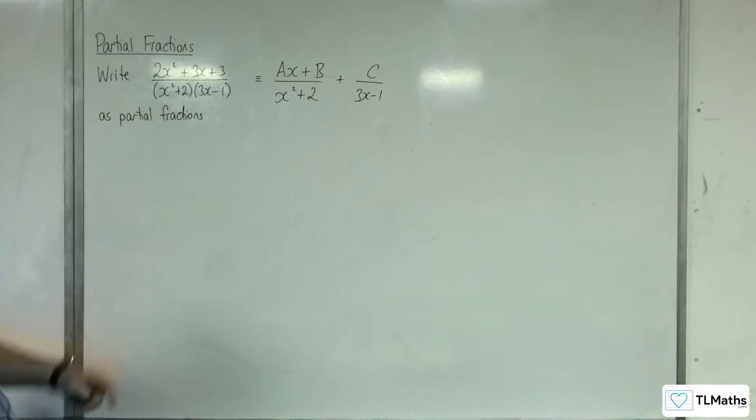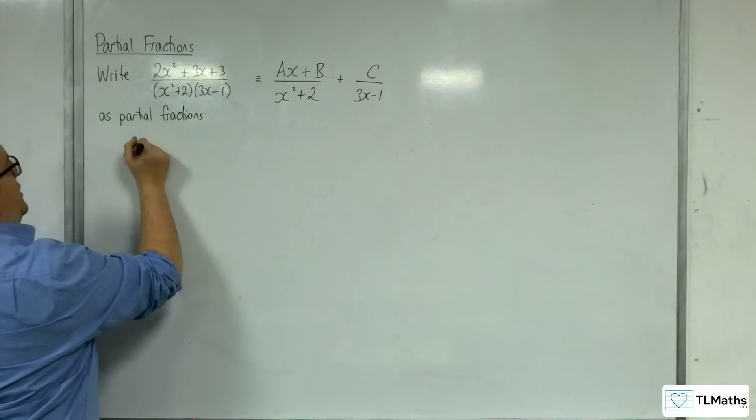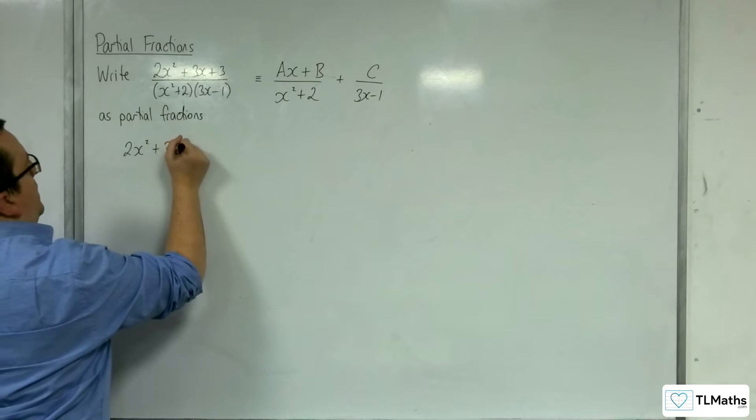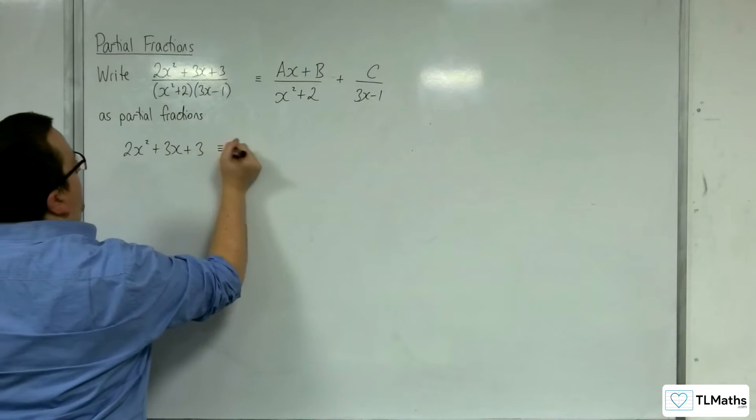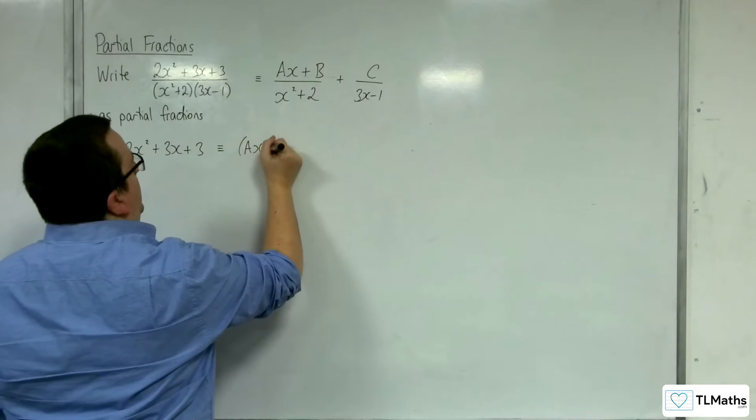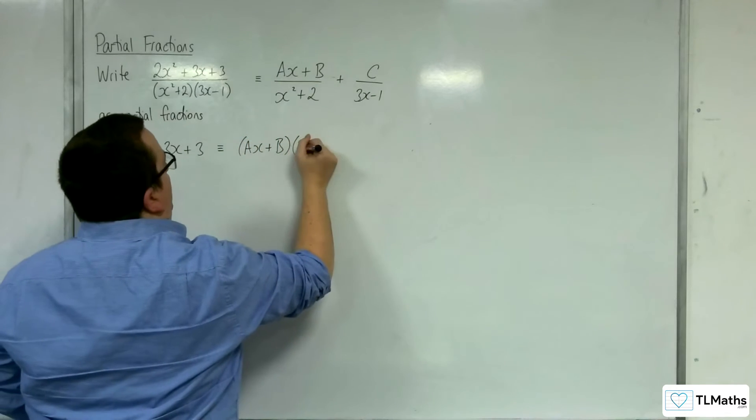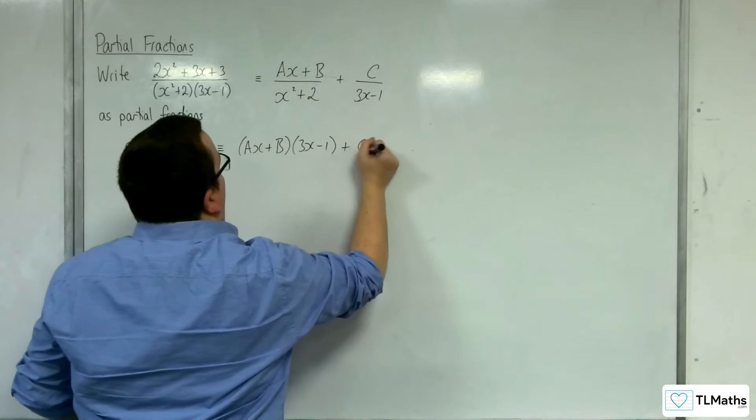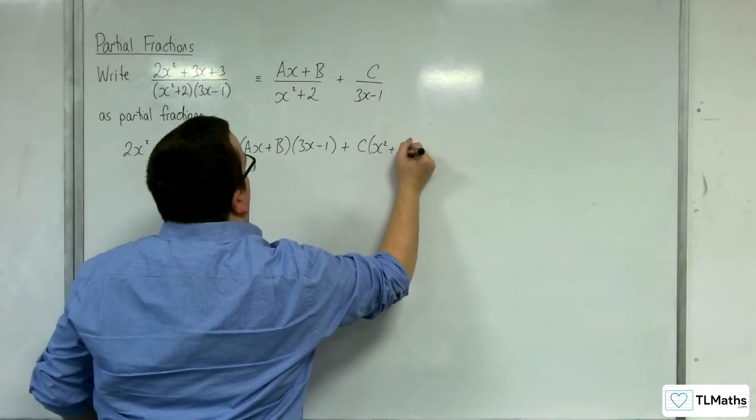We're going to multiply up by the denominators to get 2x squared plus 3x plus 3 is equivalent to ax plus b times 3x minus 1 plus c lots of x squared plus 2.